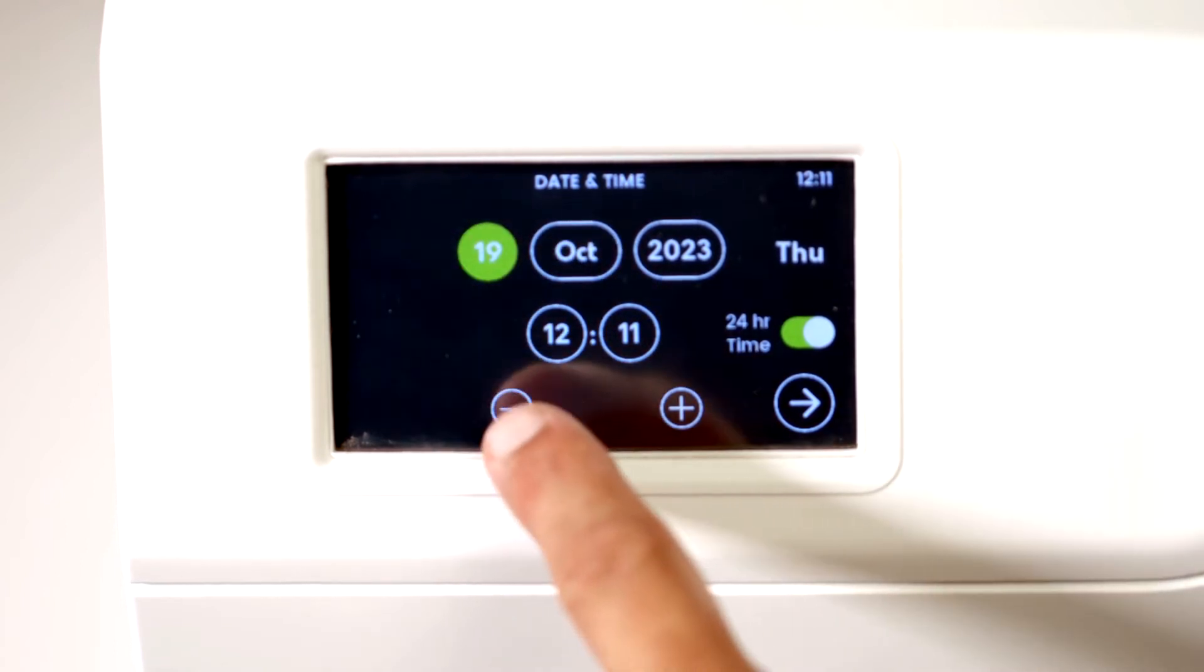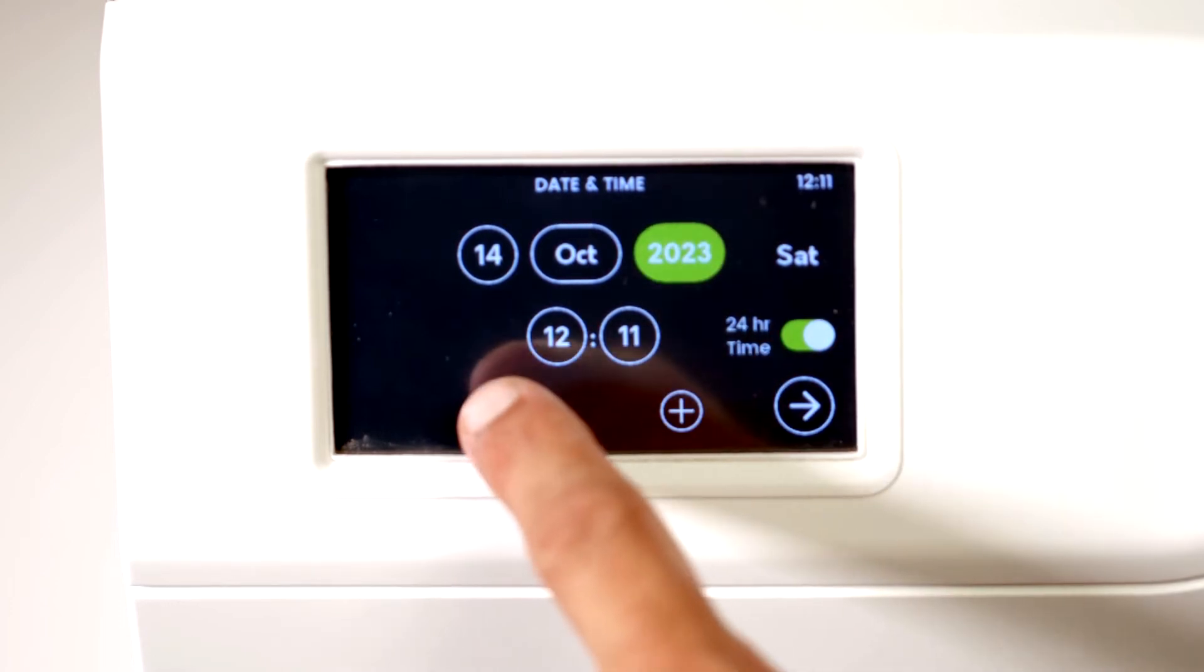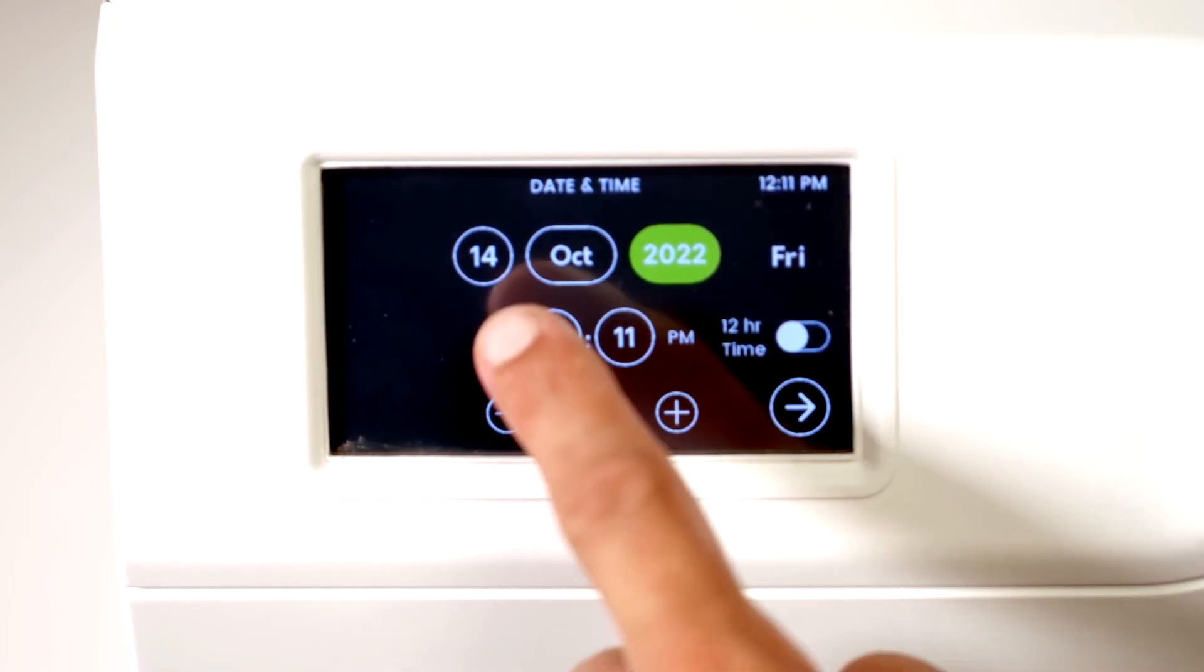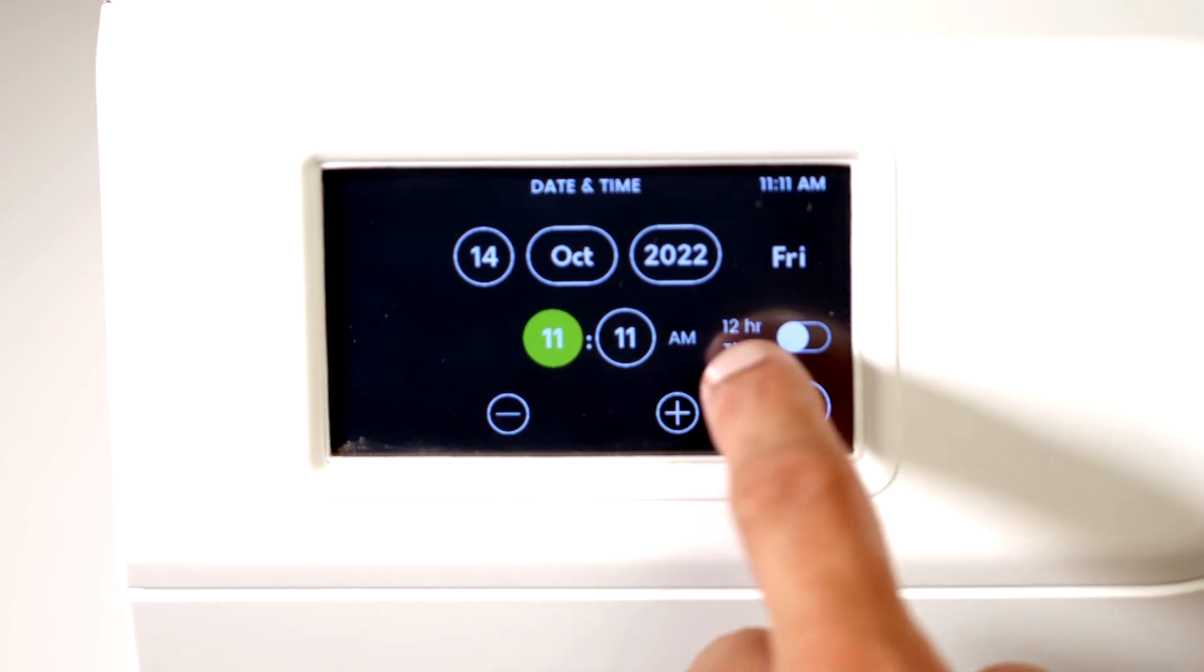On the next screen the date and time can be adjusted to suit your time zone. Touch the screen on the date or time to change it. The time can also be changed to 24 hour time. The next screen asks you to select the drain away option.